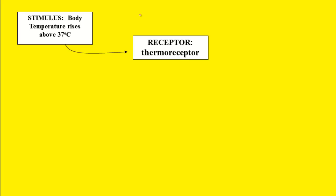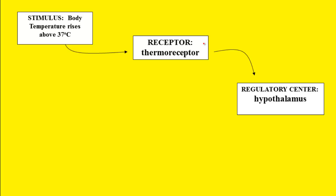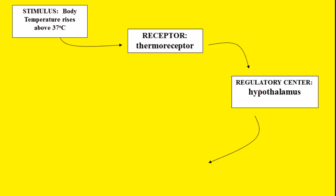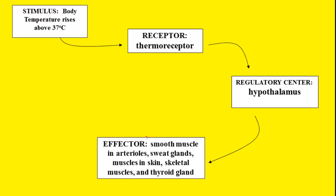Let's see how that works with an actual example. If your stimulus is that you're getting hot — your body temperature is rising above 37 degrees — that will turn on your thermoreceptor. The thermoreceptor gets the message that the body is getting too hot and sends a message to the control center, the hypothalamus in the brain. The hypothalamus then sends a message to many different effectors: smooth muscles in the arterioles, sweat glands, muscles in your skin, skeletal muscles, and your thyroid gland.